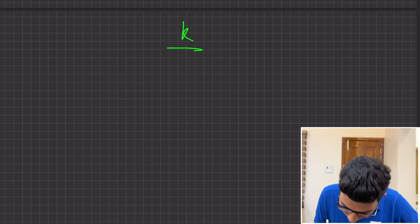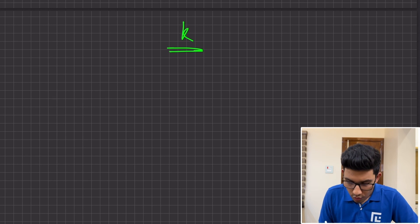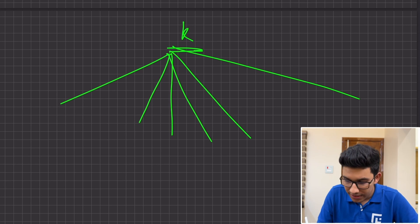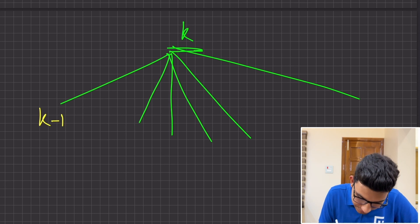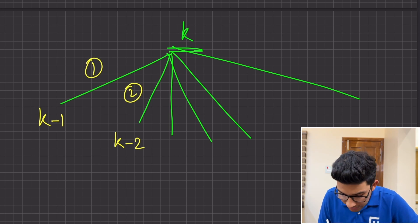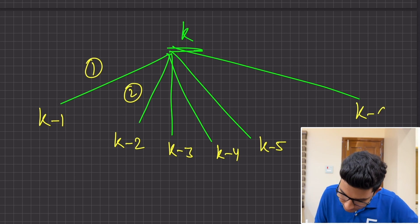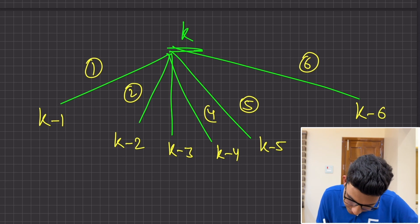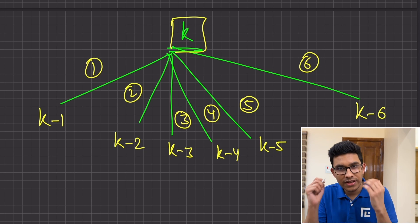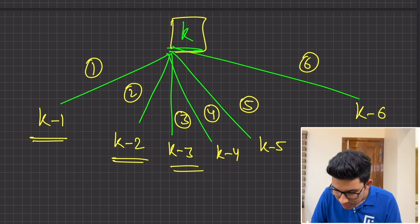You want to construct k. What are the different ways in which you can actually get a sum of k? You can divide this problem into 6 parts. You can get a sum of k from k minus 1 by making a throw of 1. You can get a sum of k from k minus 2 by making a throw of 2. You can get a sum of k from k minus 3, k minus 4, k minus 5, and k minus 6.